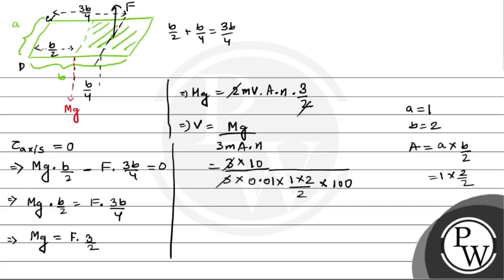So 3 and 3 cancel out, zero and zero cancel. So next, 2 and 2 cancel out. We get 1 by 0.01 into 10, which equals 1 by 0.1. 0.1 can be written as 1 by 10. So v equals 10 meter per second. This is our final answer.